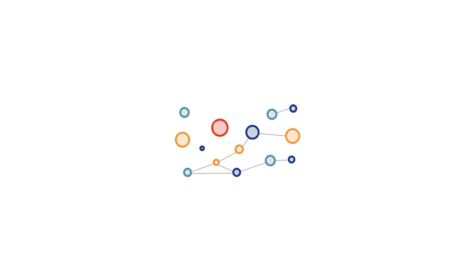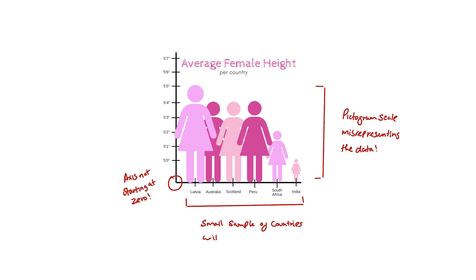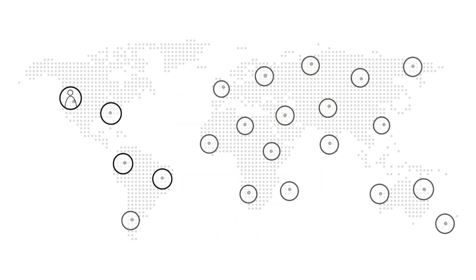We live in a world that is increasingly defined by data, but how we portray this data impacts the meaning. How would you feel if you were one of the data points in this visualisation? The colours, labels, icons and words we use are critical elements of our data stories. We need to take a closer look to ensure that our data stories consider the context of the incredibly diverse world that we live in.